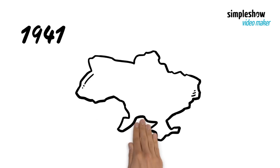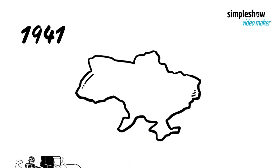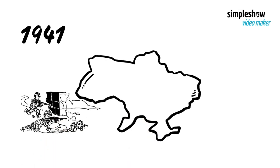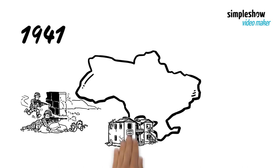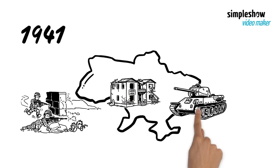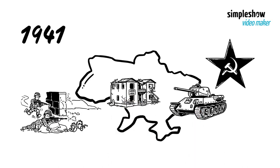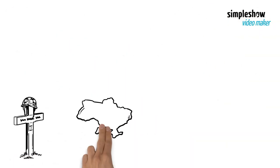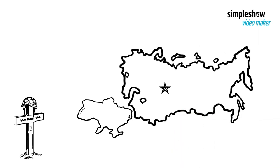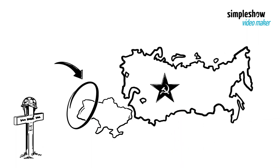Then, in 1941, during World War II, Ukraine was overrun by Axis armies and was consequently further devastated, only to be retaken by the Soviets in 1944. By the end of the war, the borders of the Ukrainian Republic of the Soviet Union had been redrawn to include the western Ukrainian territories.